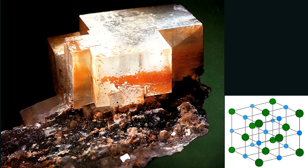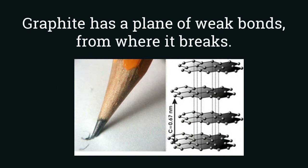To start with, let's observe this specimen of halite. It is composed of NaCl and it crystallizes in a cubic system. The arrangement of ions inside the cubic structure has some weak planes which are parallel to the faces of the cube. Similarly, graphite also has weak planes which are parallel to the hexagonal sheets of carbon, and graphite owes its softness to these weak planes only.